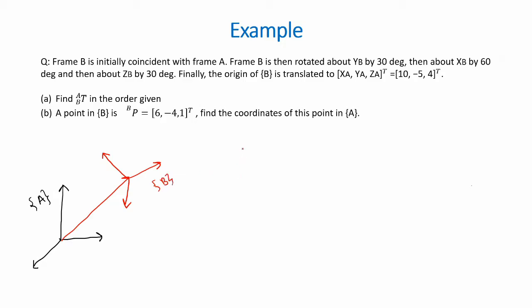We know that frame B was initially rotated along the y-axis by 30 degrees followed by a rotation in the x-axis by 60 degrees and a rotation in the z-axis by 30 degrees. The origin of frame B was then translated with position vector 10, minus 5, 4.